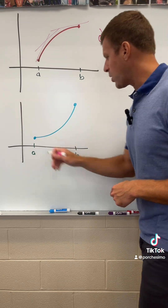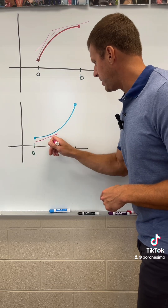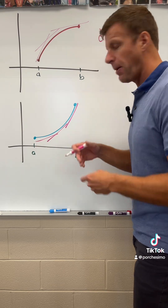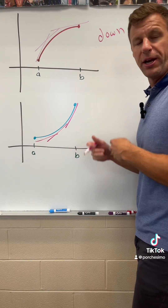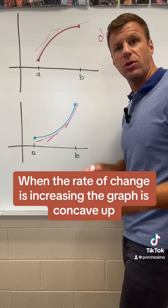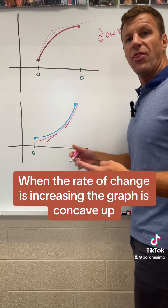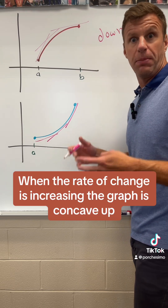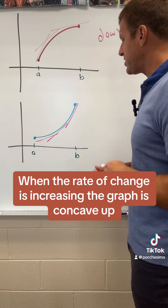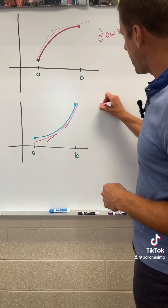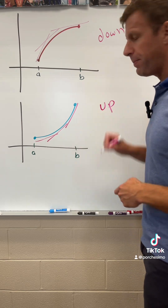Here we see that our rates of change are getting bigger and bigger. So we're increasing at an increasing rate — that's when we have rates of change that are getting bigger. And when your rates of change are increasing, you're concave up.